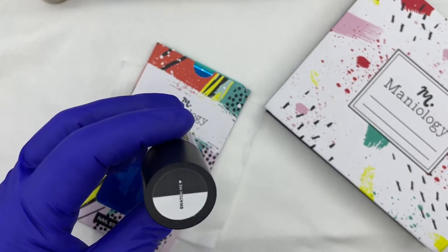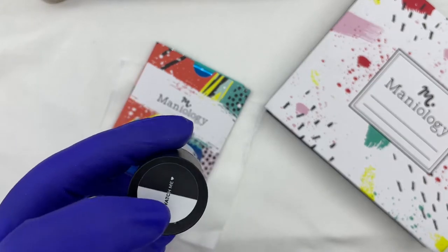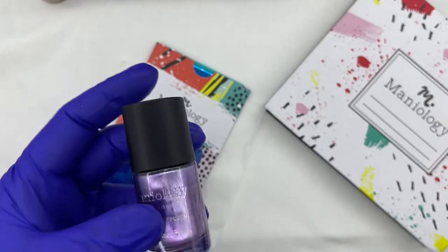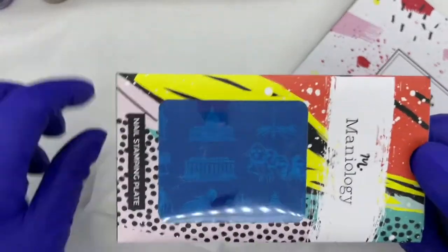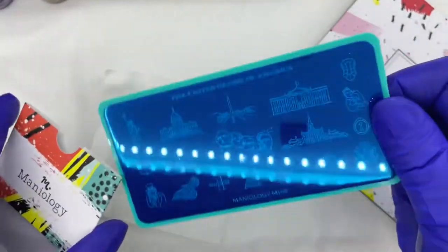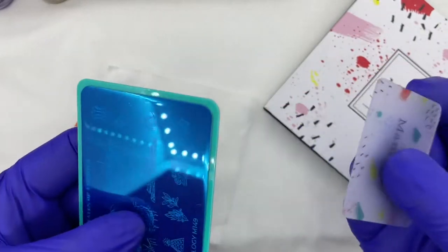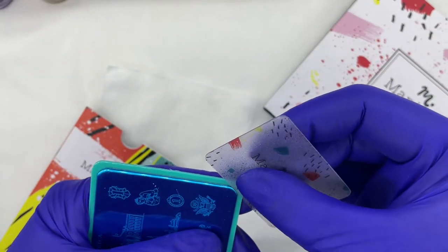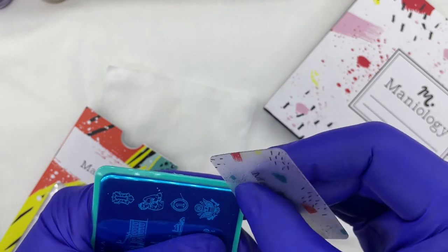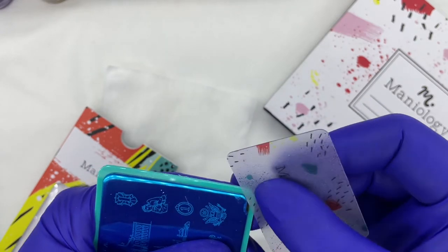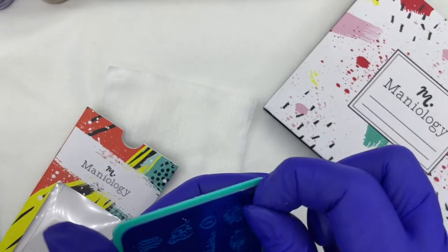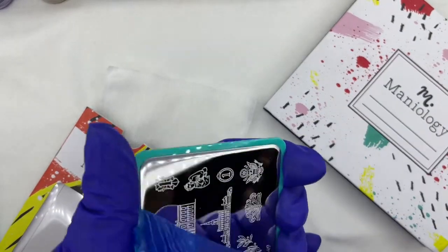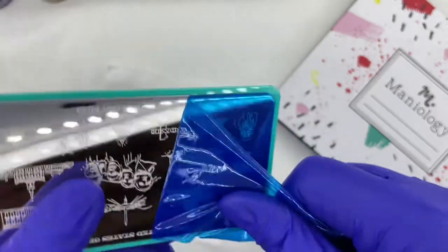Before we get started, I thought I would show you a little trick for peeling the blue film off your plates. Use your scraper card and just kind of come at that corner just a little bit, slide it along. Because you shouldn't be doing this with your nails - nails are jewels, not tools. We preach that all the time; we should be practicing what we preach.